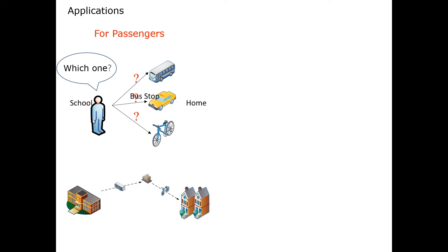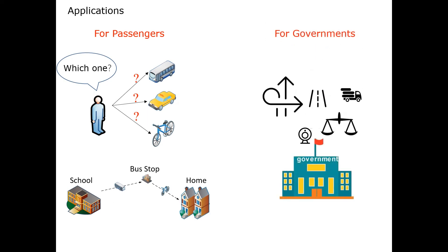Our model has many useful applications. For passengers, we can give advice on which transport they should take, and we can also plan multi-modal traffic routes for them. For governments, we can warn them of traffic jams, give a bike rebalancing scheme, and so on.